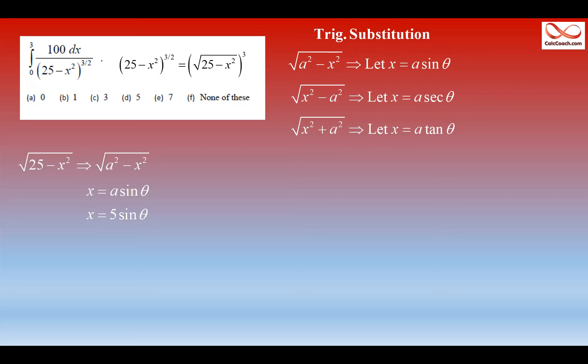So that means that we should let x equal five sine theta. By doing that, we then have to substitute, replace parts of the integral. There are only two parts that we have to replace, the dx from the numerator and the three halves power, 25 minus x squared, square root of the cube, that guy.